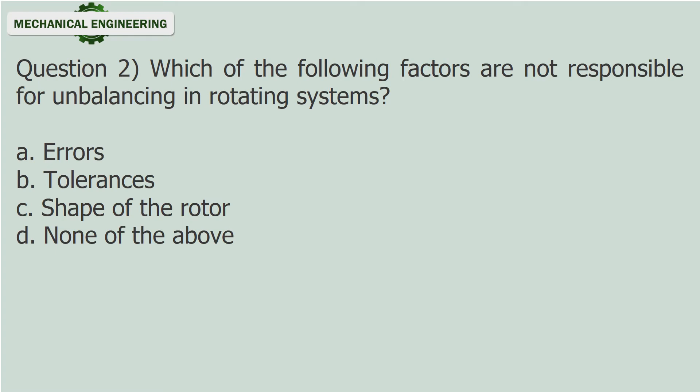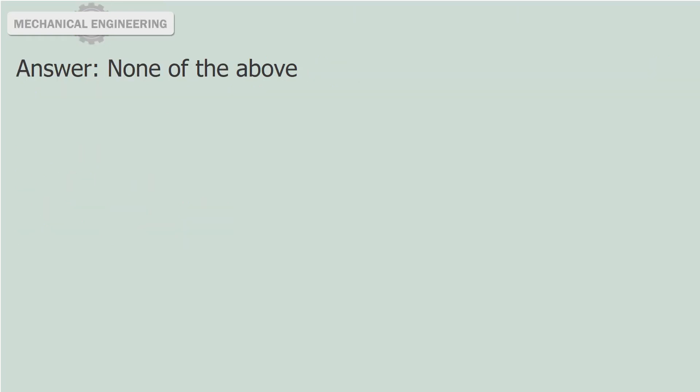Question 2: Which of the following factors are not responsible for unbalancing in rotating systems? a. Errors. b. Tolerances. c. Shape of the rotor. d. None of the above. Answer: None of the above.